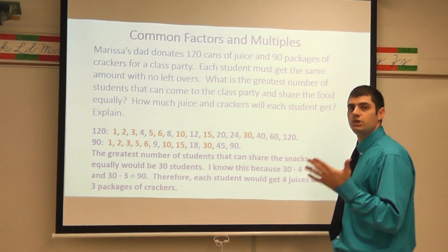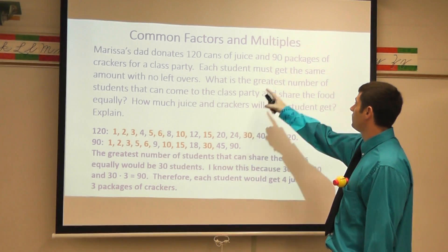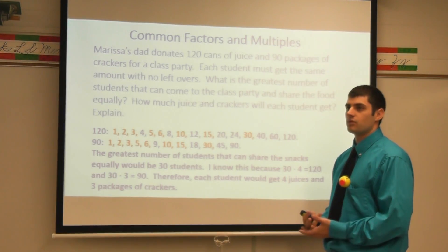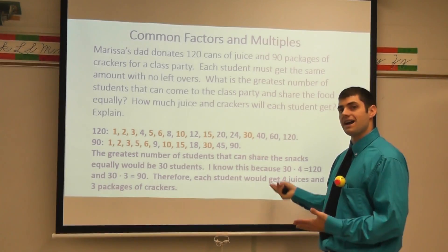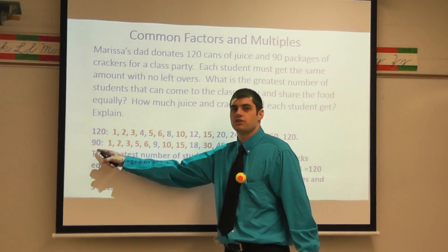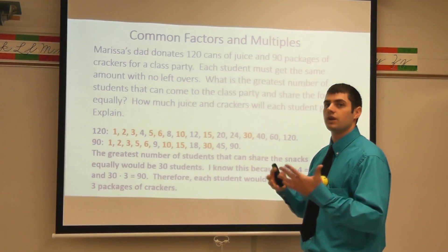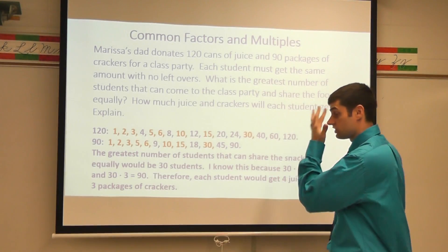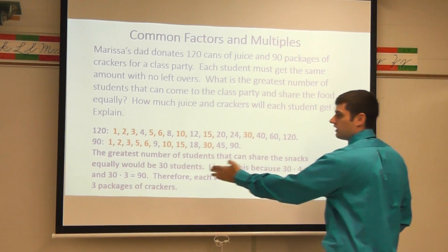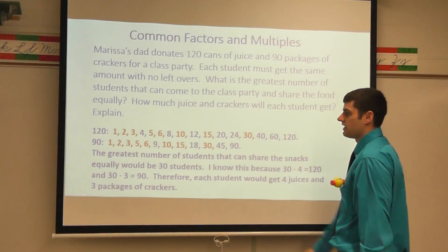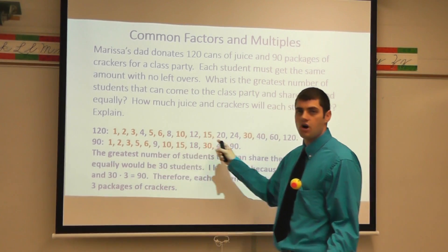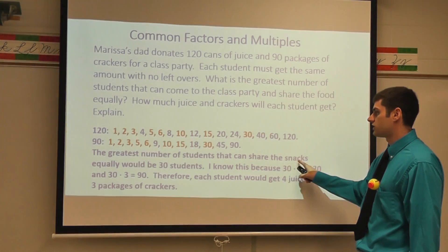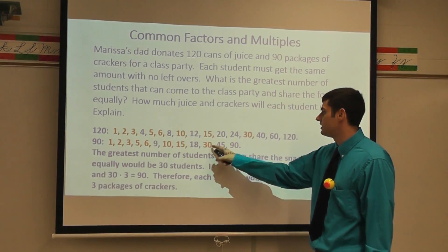I'm going to use common factors. One of the key words here is I'm looking for the greatest number of students that can come. Think about 'greatest number' — that means greatest common factor. If I have 120 juices and 90 crackers and I find the greatest common factor, that's going to be the greatest factor they have in common that works out evenly. I listed all the factors of 120 and all the factors of 90, and highlighted all the ones they had in common. The greatest number of students that can share the snacks equally would be 30 students, because that's the GCF.